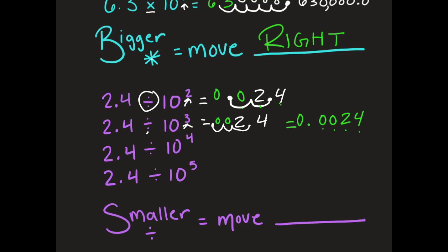Coming down to the next one, I'm dividing so I'm getting smaller. I move the decimal point 4 times: 1, 2, 3, 4. Fill those in with zeros. If I were to rewrite it: decimal point, 0, 0, 0, 2, 4 — so 0.00024.